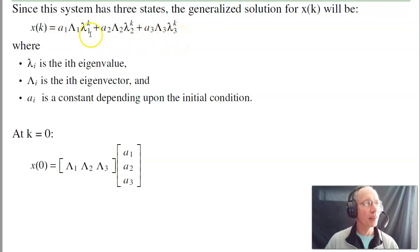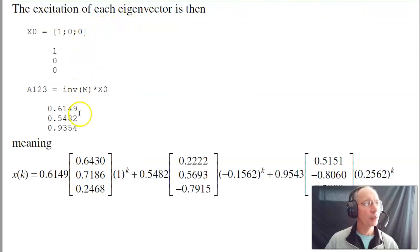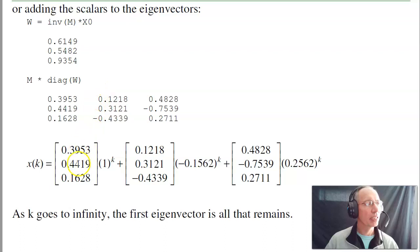Lambda is the eigenvalue. Capital Lambda is the eigenvector, and A's are the constants. At k equals zero, the initial value, anything to the zero power is one. So we have A times lambda one plus A times lambda two. Put that in matrix form. The initial condition tells you how much you excite each eigenvector. If you solve, the initial condition of one, zero, zero excites the eigenvectors as 0.61 times the first eigenvector, 0.54 times the second, 0.93 times the third. This is the equivalent solution.